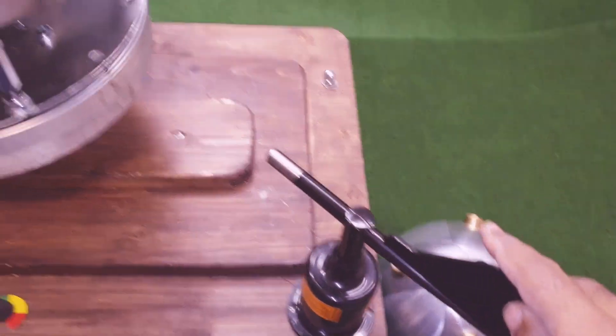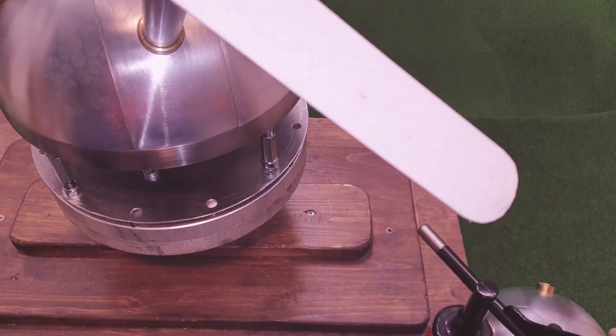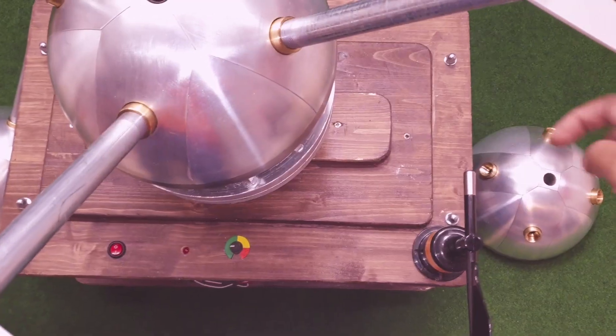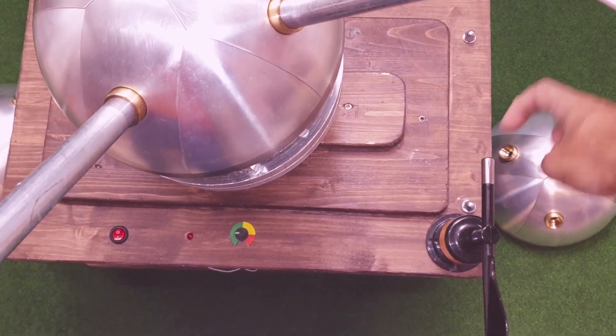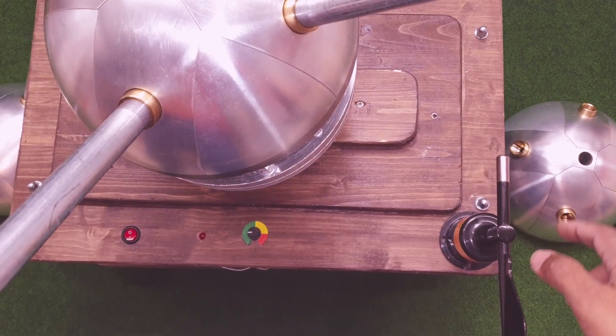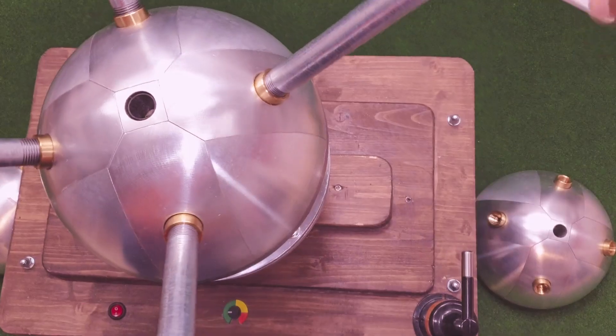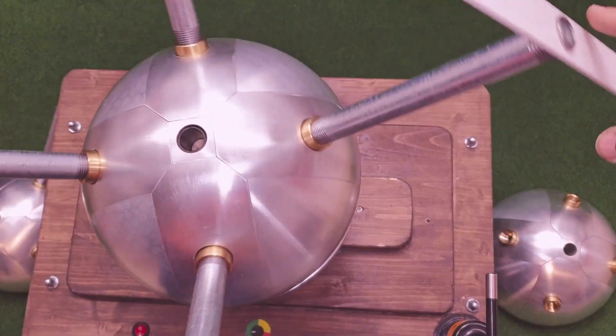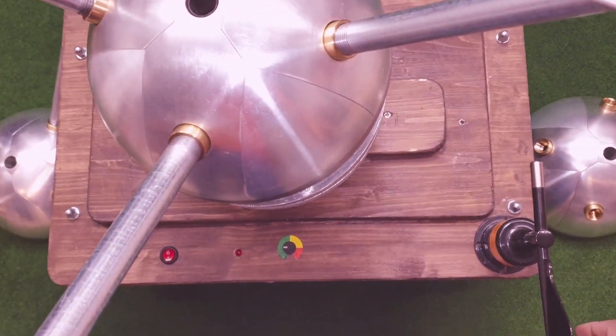Whenever there is a change in wind, the propeller rotates and aligns to that particular wind direction. In this case, the wind is coming in this direction and this is pointing to the wind. The wind will push the propeller blades and it will rotate. Whenever there is a change in wind direction...